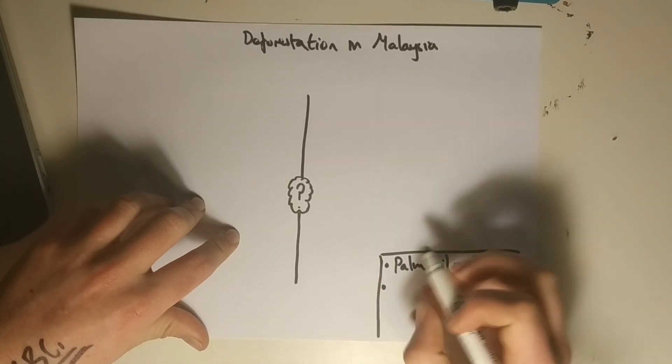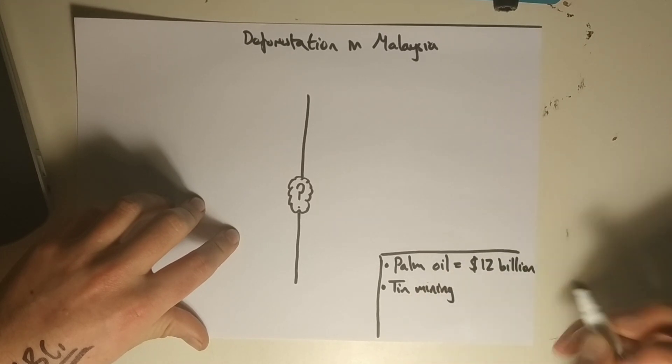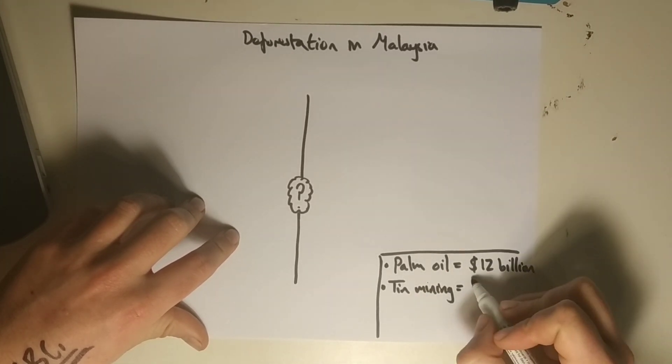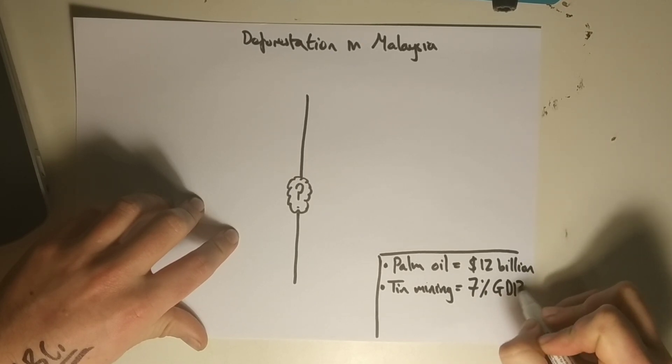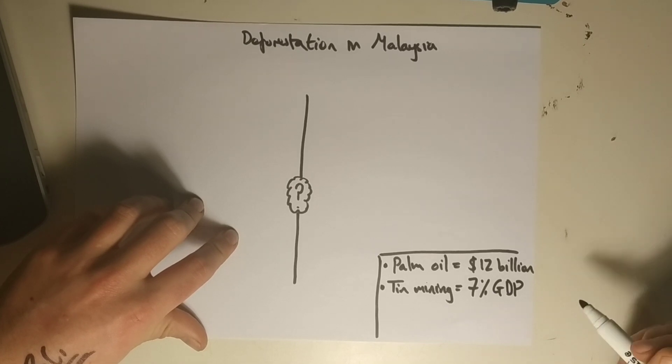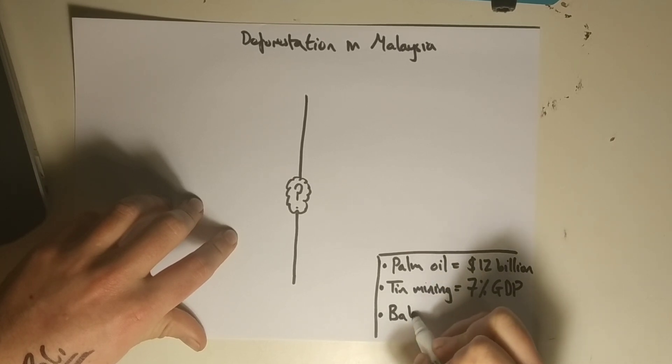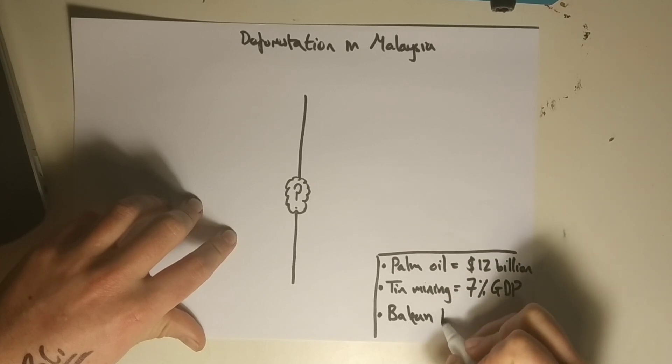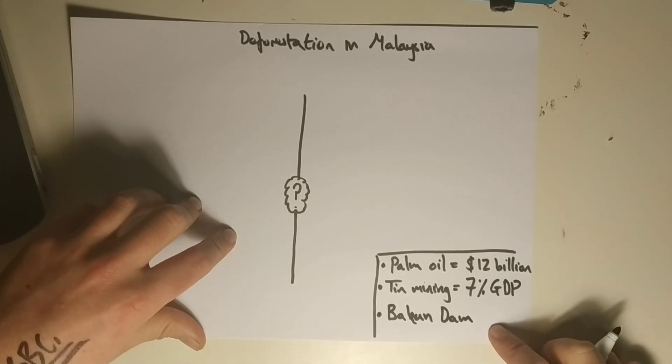Another reason is that we have tin mining in Malaysia, a really important metal for a wide range of things, and that equals about 7% of the GDP. That is a huge proportion of the gross domestic product of Malaysia. And finally, one of the key reasons was for creating the Bakun Dam, which has provided large parts of Malaysia with cheap, high quality renewable energy.